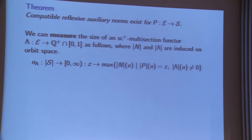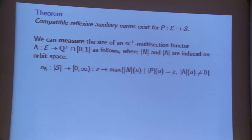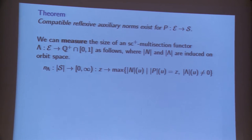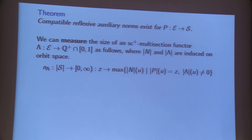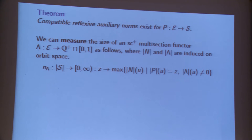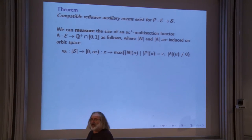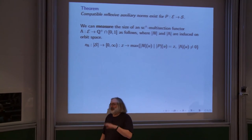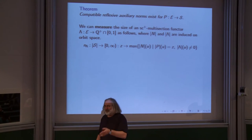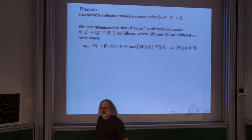One theorem is that a compatible reflexive auxiliary norm exists. The construction is rather easy — take a local model, view locally as a retract in a Banach space, just take the norm and a partition of unity times the norm, then restrict it to the retract. If you add it up, it has precisely the required property. So if you have to construct such a thing for a Banach manifold or Banach bundle, that's precisely what you would do.